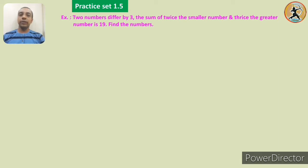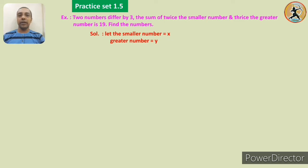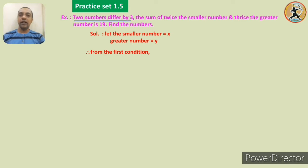Let us assume that the smaller number is x and the greater number is y. Now let us consider the conditions. The first condition: two numbers differ by 3. The second condition: sum of twice the smaller number and thrice the greater number is 19. By the first condition, we can write the equation: y minus x is equal to 3.